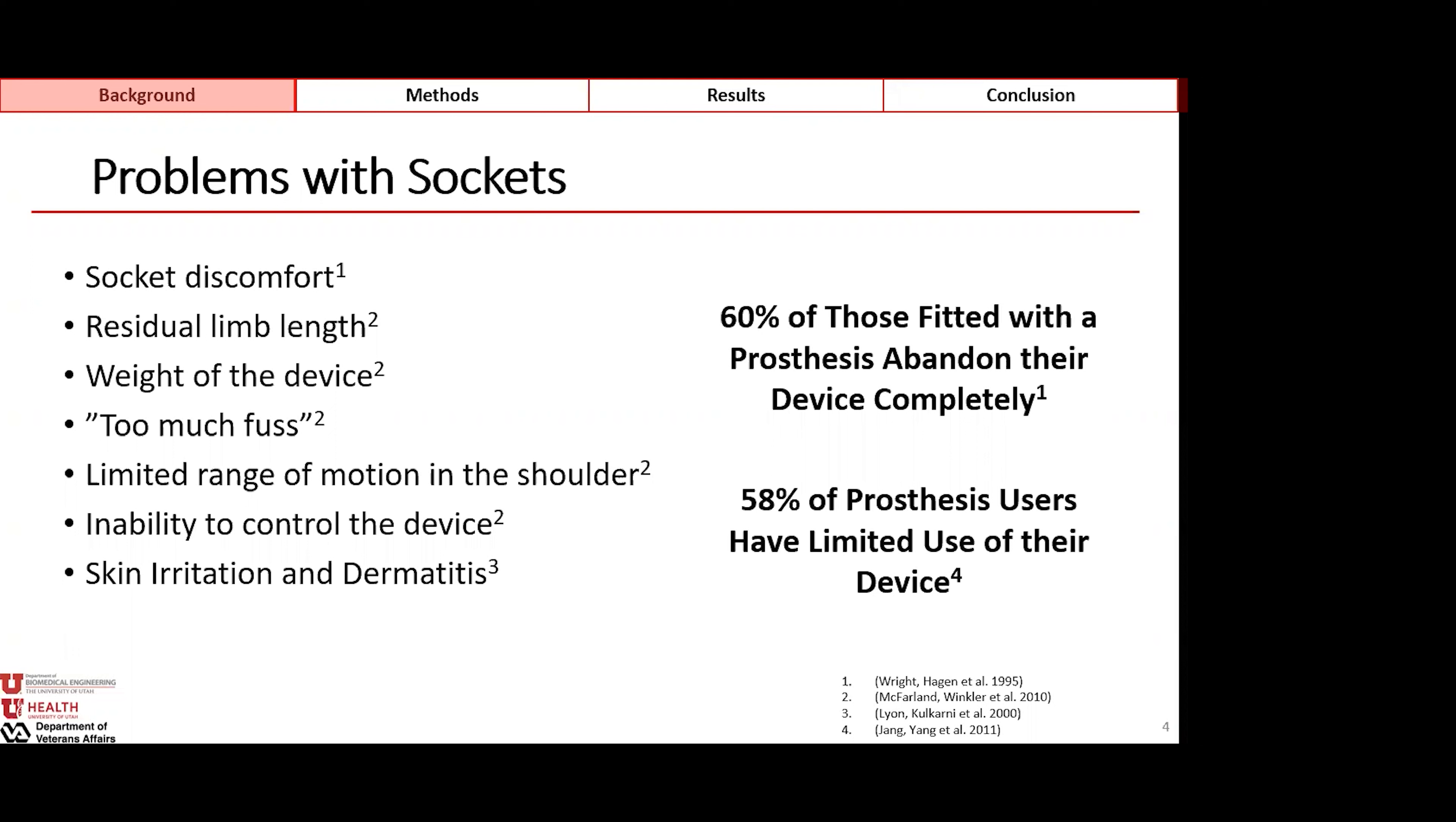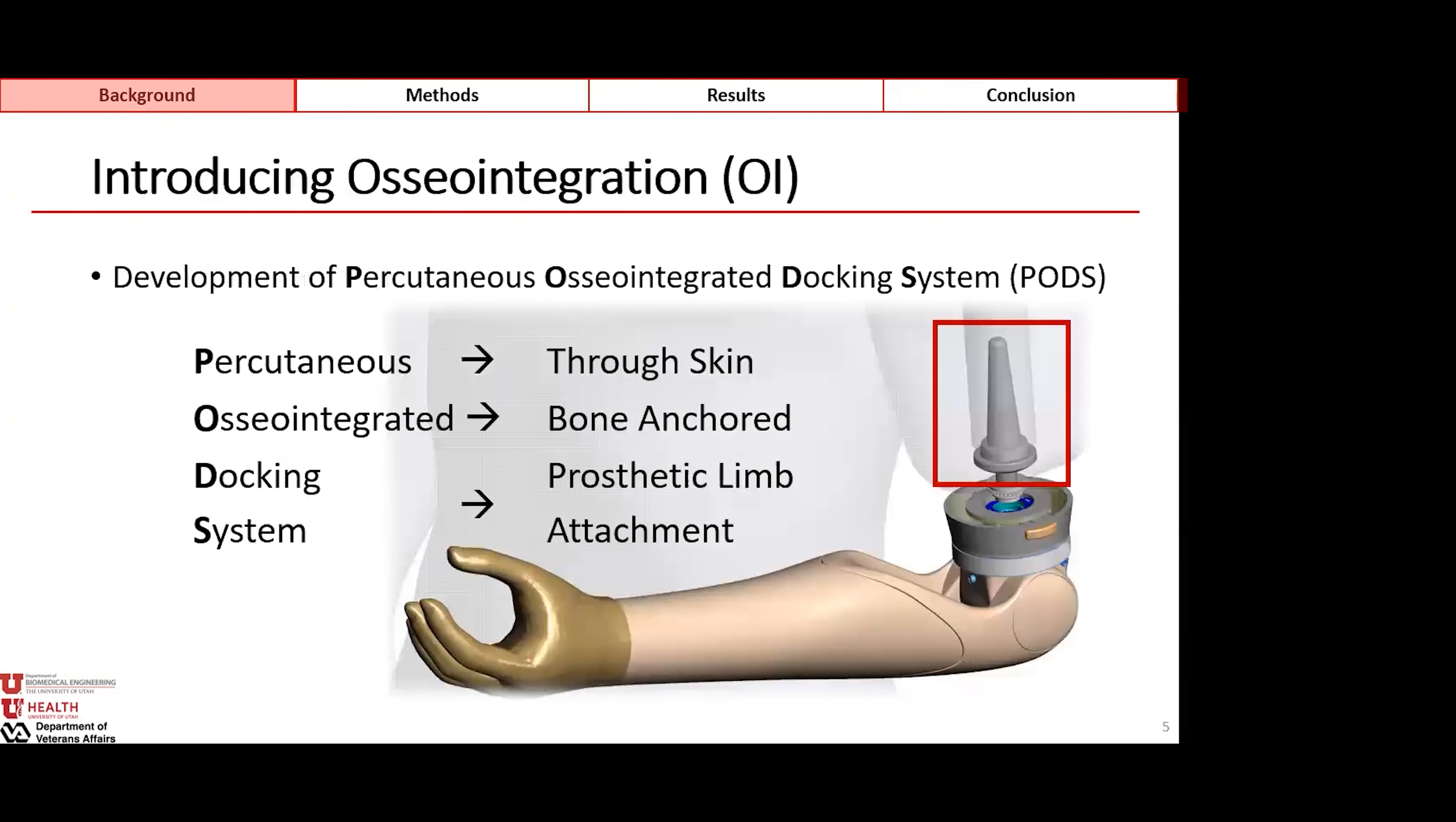Our lab seeks to improve wear time by removing the need for a socket with percutaneous osteo-integrated docking systems, which use OI endoprosthetic technologies. We see here our pods on the right side of the screen, and this is a device that creates a direct skeletal attachment between the prosthetic device and the residual limb. While this removes issues like contact dermatitis and effects on shoulder range of motion, we still worry about the change in weight between the contralateral intact limb and the prosthetic device.